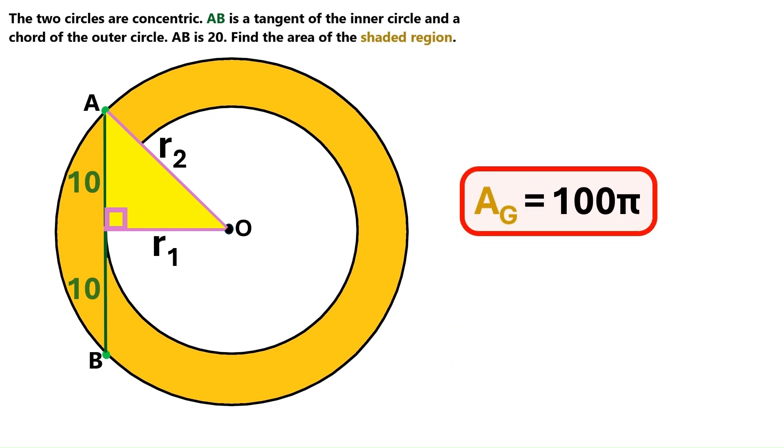That's it people. The area of the gold colored region is 100 Pi. If you enjoyed this video, please don't forget to push the like button and subscribe to my channel for future videos. Have a good day and see you soon. Thank you so much. And for Doug, bye guys.